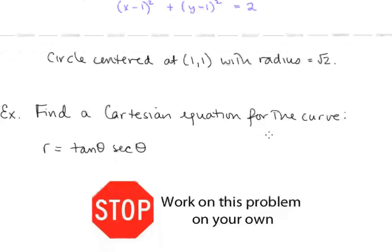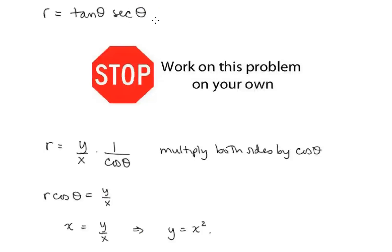Now let's find the Cartesian equation for r equals tan theta times secant theta. We know tan theta equals y over x, so we replace tan theta with y over x. We also know secant theta is 1 over cosine theta. Since r and cosine theta appear together, let's multiply both sides by cosine theta — we get r cosine theta on the left, which equals x, and y over x on the right. So x equals y over x, meaning y equals x squared.